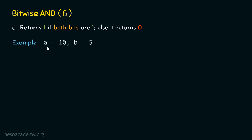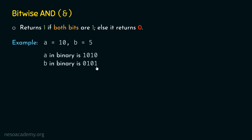Here we have A as 10 and B as 5. These are decimal values. We cannot directly apply the bitwise AND operator on these values; we need to convert them to their equivalent binary values. This requires understanding how to convert a decimal number to its binary equivalent, which was covered in the previous presentation. A in binary is 1010, while B in binary is 0101 — these are the binary equivalents of 10 and 5. Now we need to perform the bitwise AND operation on these binary values, bit by bit.